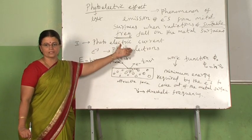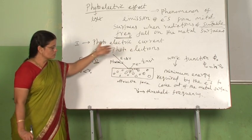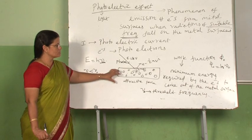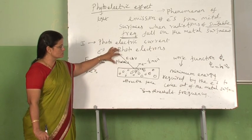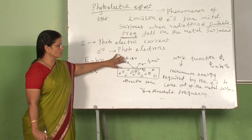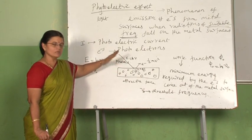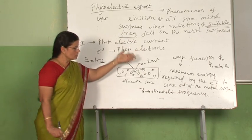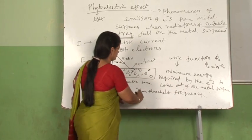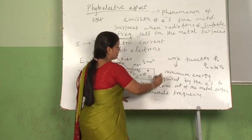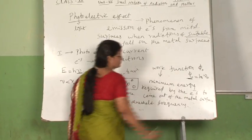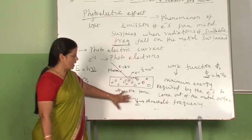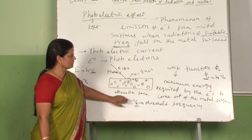The threshold frequency is the minimum frequency that should be possessed by the incident photons which can result in the photoelectric emission. The threshold frequency definition and work function definition are very important and we have to understand these very clearly.